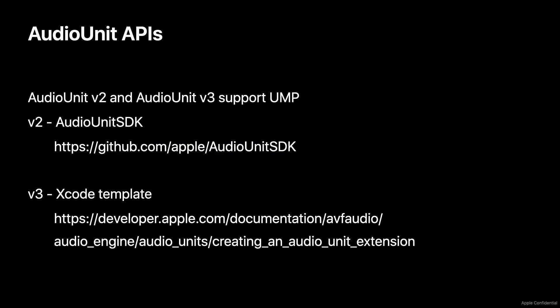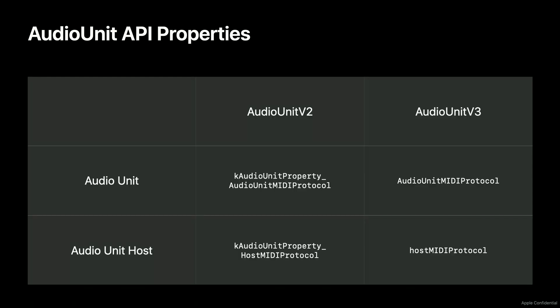Let's switch gears and talk about Audio Unit APIs, which also enjoy MIDI 2.0 native support on macOS and iOS. Both version 2 and version 3 of Audio Units support MIDI 2.0 and MIDI 1-up. More detailed info on the version 2 implementation can be found at the indicated URL. There's actually an Xcode template for version 3 audio units, also known as audio unit extensions, and a very long but hopefully memorable URL as well. These are the properties that control MIDI 2.0 support for audio units. Like Core MIDI, the protocol is converted anywhere it needs to be for the legacy audio units and hosts.